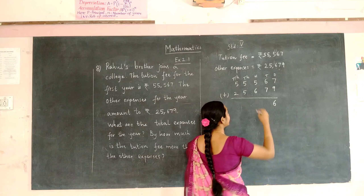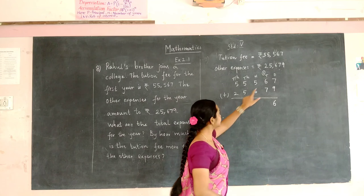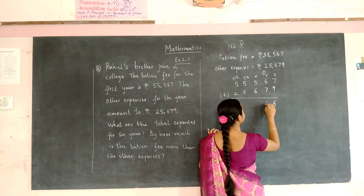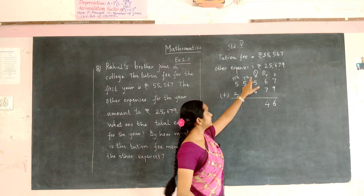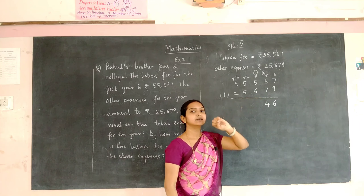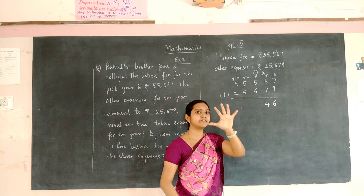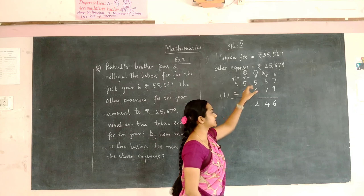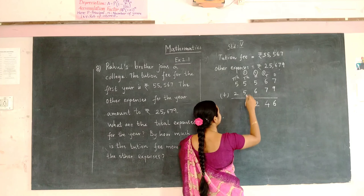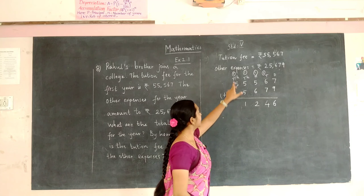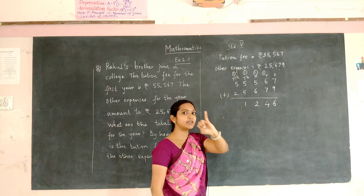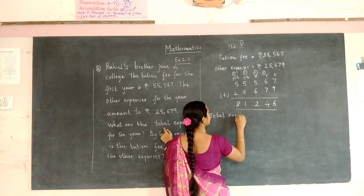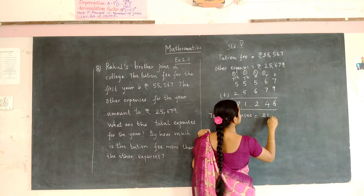Write 6 here and carry 1 to the 10s place. 6 plus 1 will be 7 — add 7 and 7: 8, 9, 10, 11, 12, 13, 14 — write 4 and carry 1 to the 100s place. 5 plus 1 is 6 — add 6 and 6: 7, 8, 9, 10, 11, 12 — write 2 and carry 1 to 1000s place. 5 plus 1 is 6 — add 6 and 5: 7, 8, 9, 10, 11 — carry 1 to 10,000s place. 5 plus 1 is 6, add 2 — that is 7 and 8. So the total expenses are Rs. 81,246.